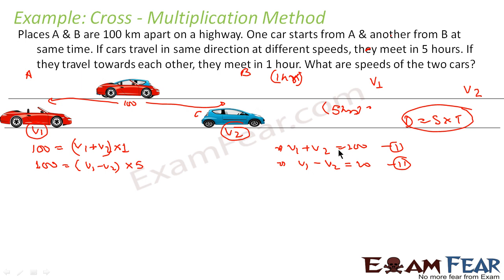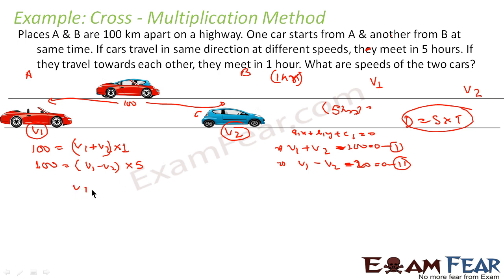Since we have to put these in the Ax plus By plus C equals 0 form: equation 1 becomes V1 plus V2 minus 100 equals 0, and equation 2 becomes V1 minus V2 minus 20 equals 0. Now we write these in the cross multiplication table with columns for V1, V2, and 1.